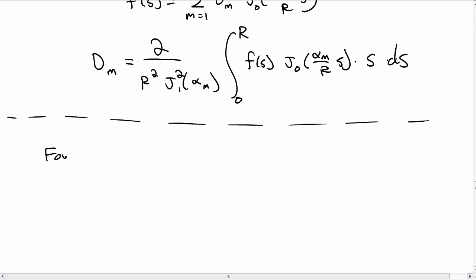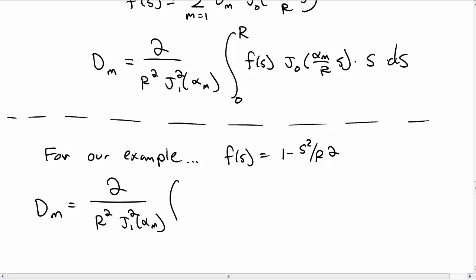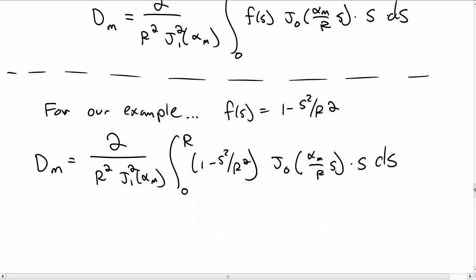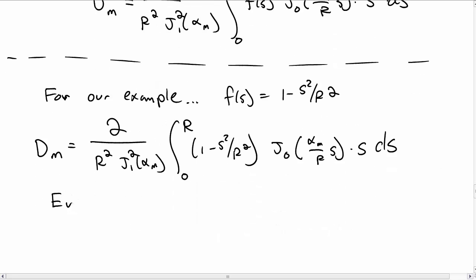So for our particular function, we have f of s being 1 minus s squared over r squared. And so we can plug this into this integral. And so we have this coefficient here, an integral from 0 to r, 1 minus s squared over r squared, j 0 of alpha m over r s times s ds. We need to do this integral for every m in order to figure out what the coefficients are, d sub m.